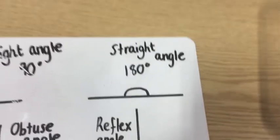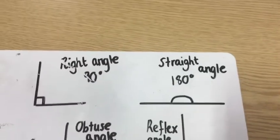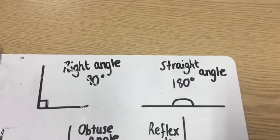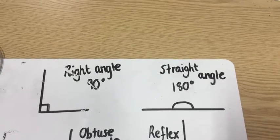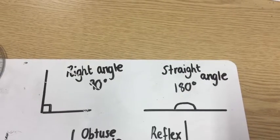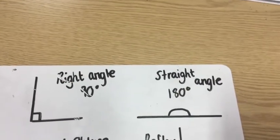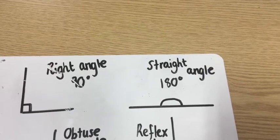Following on from this, we have a straight angle, which is 180 degrees. If you compare it with a right angle, you should be able to see that it is the size of two right angles put together, making it 180 degrees, so it is a straight line.